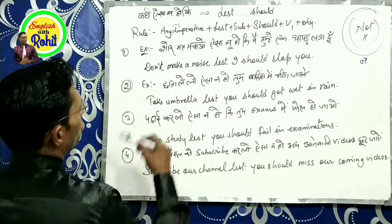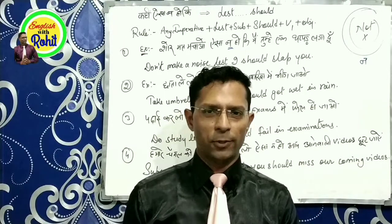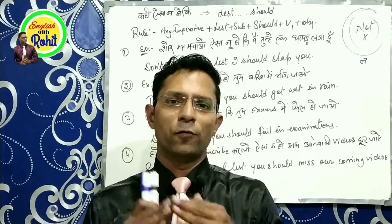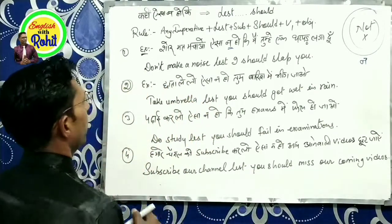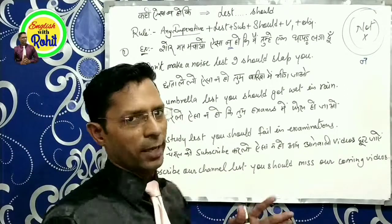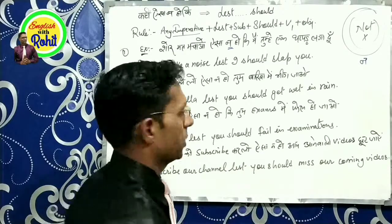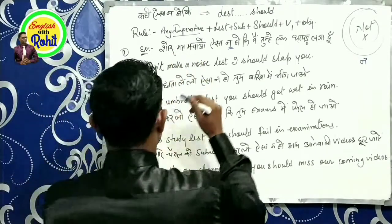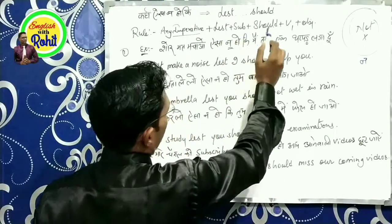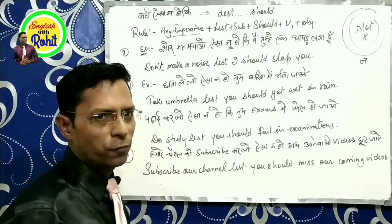Example लेते हैं। शोर मत मचाओ ऐसा ना हो की मैं तुम्हें थपड़ लगा दूं। देखें, last or should का जब भी आप योग करेंगे तो आपको ध्यान रखना है कि एक formula है जिसे follow करना है। Normally last or should के sentence से पहले एक imperative sentence दिखाई देता है — more than 90% ऐसा होगा। पहले imperative sentence, उसके बाद lest subject should, first form of the verb, then object।